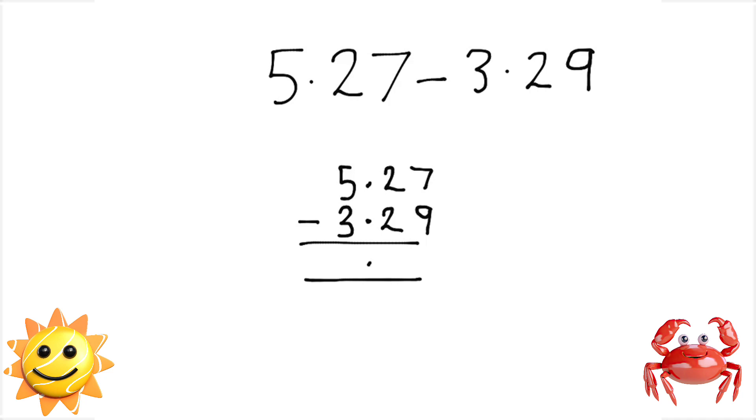First thing we need to do is 7 subtract 9. Now we can't do that. So again, we go to the next column along and we follow the same method. And we now have 17 subtract 9, giving us 8.